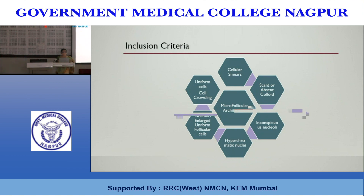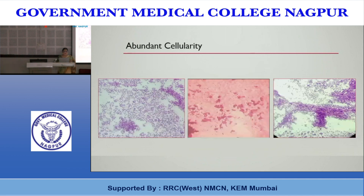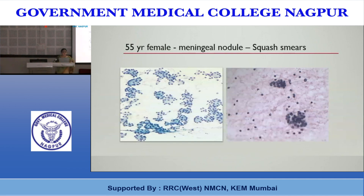One can see abundant cellularity and repetitive follicular arrangement, with some colloid in the background. In a case of a 55-year-old female presenting with a meningeal nodule, squash smears showed an abundance of uniform, equi-sized follicles — so characteristic that the primary could immediately be pinpointed to the thyroid.